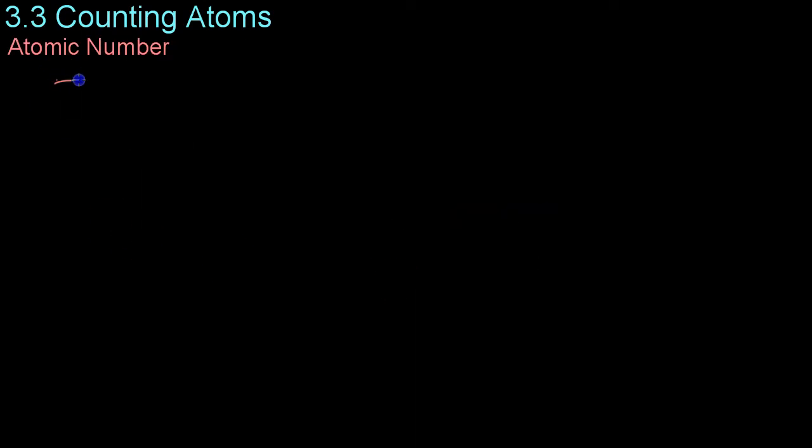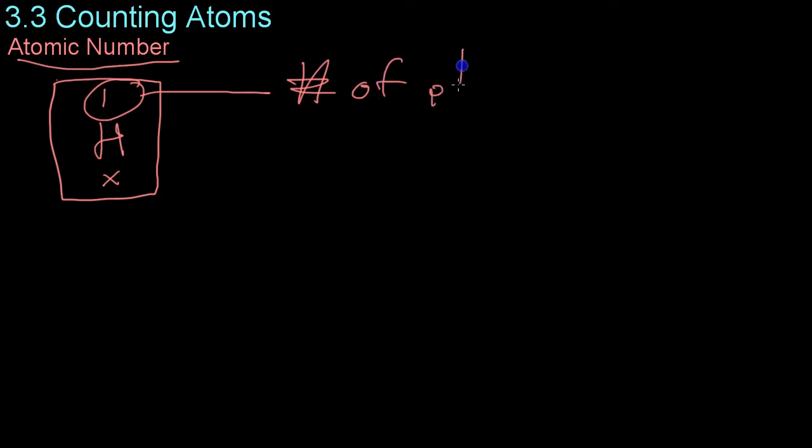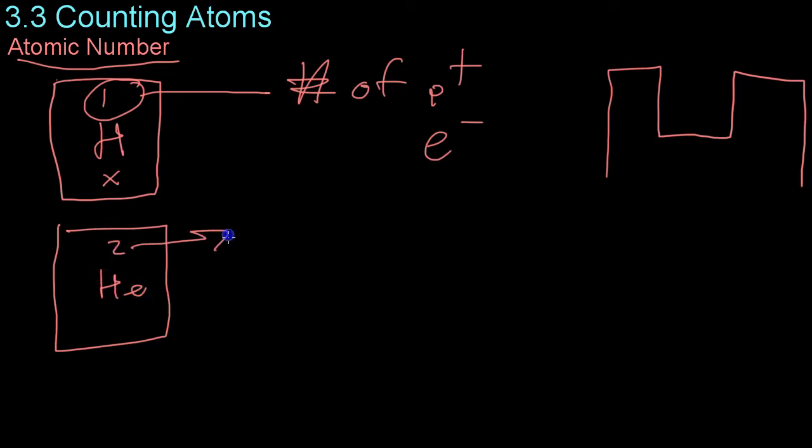If you look at a periodic table you'll notice that each element, let's say hydrogen, has a number above and some number below it. The number above it is what is known as the atomic number, and that is the number of protons, and because atoms are electrically neutral, also the number of electrons present in any given atom of hydrogen. And you'll notice that the elements are arranged by increasing atomic number. For example, helium is element number two and therefore has two protons and two electrons.